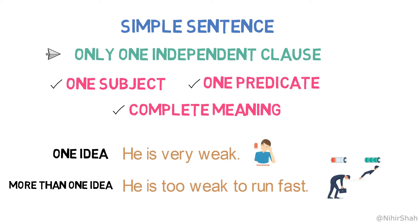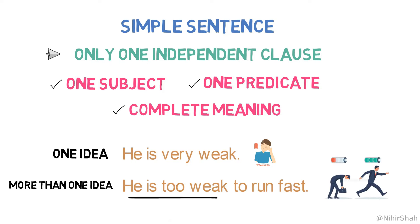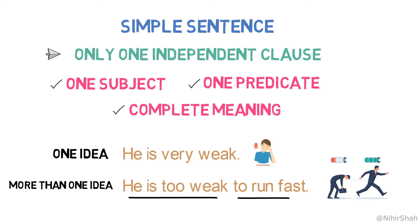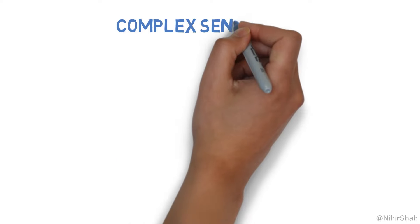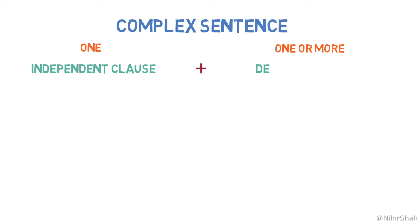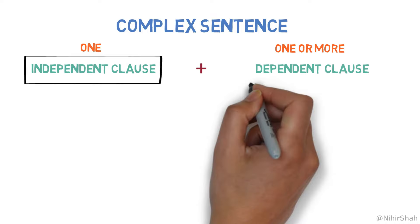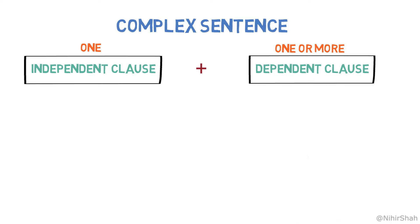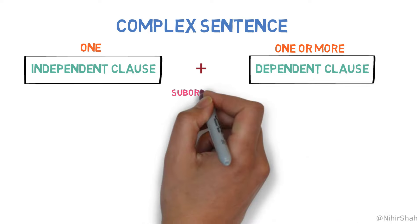Here, there are two ideas. One is 'he is very weak' and the second is 'to run fast,' which is linked to the first idea. Now, let's learn what a complex sentence is made of. It is made of one independent clause and one or more dependent clauses. The independent and dependent clauses are joined with a subordinating conjunction.